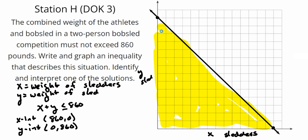Now, if this were just this problem here, X plus Y is less than or equal to 860, no context, we'd be done. We'd have our solution region. And it would include more of the graph than we're showing here, wouldn't it?